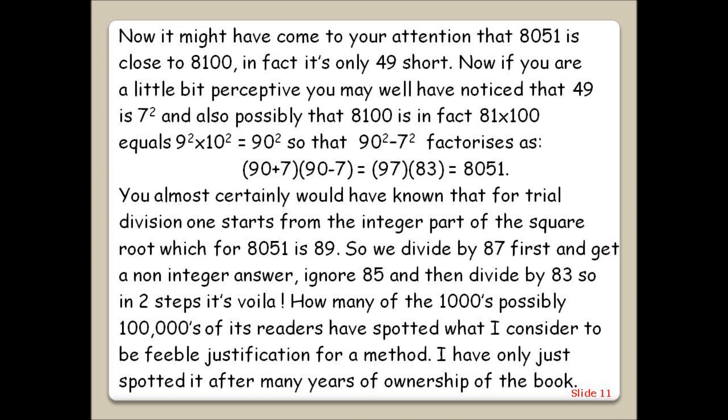Now, it might have come to your attention that 8051 is close to 8100. In fact, it's only 49 short. Now, if you are a little bit perceptive, you may well have noticed that 49 is 7 squared, and also possibly that 8100 is in fact 81 times 100, which equals 9 squared times 10 squared equals 90 squared. So that 90 squared minus 7 squared factorises as 90 plus 7 times 90 minus 7 equals 97 times 83 equals 8051.